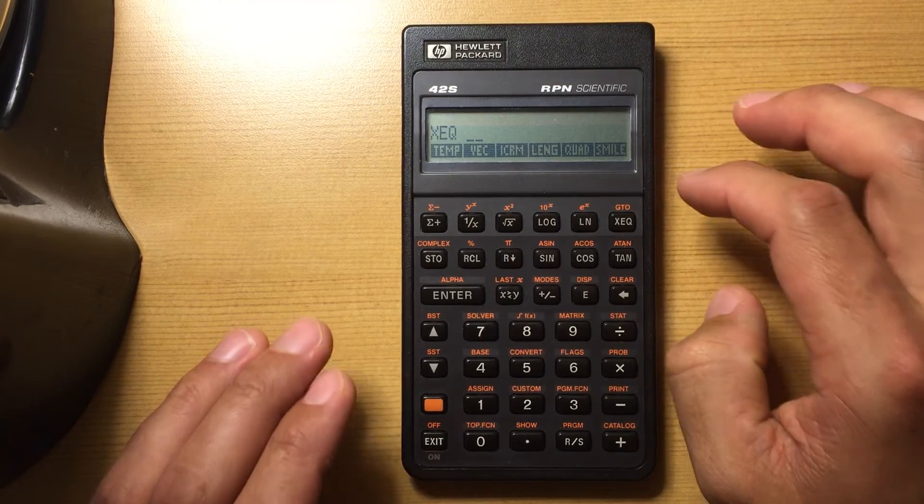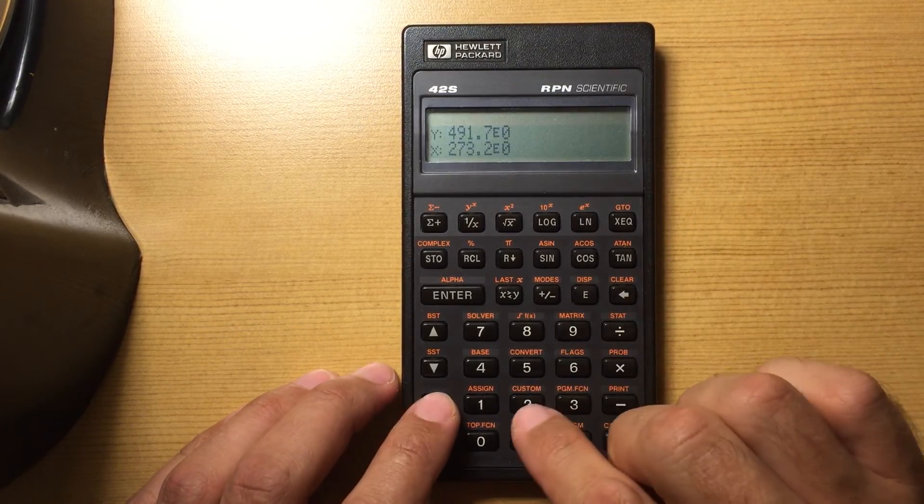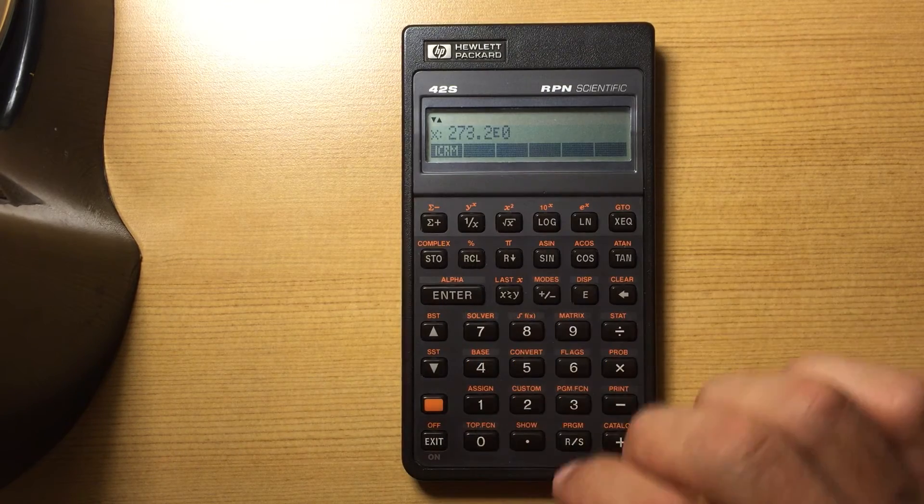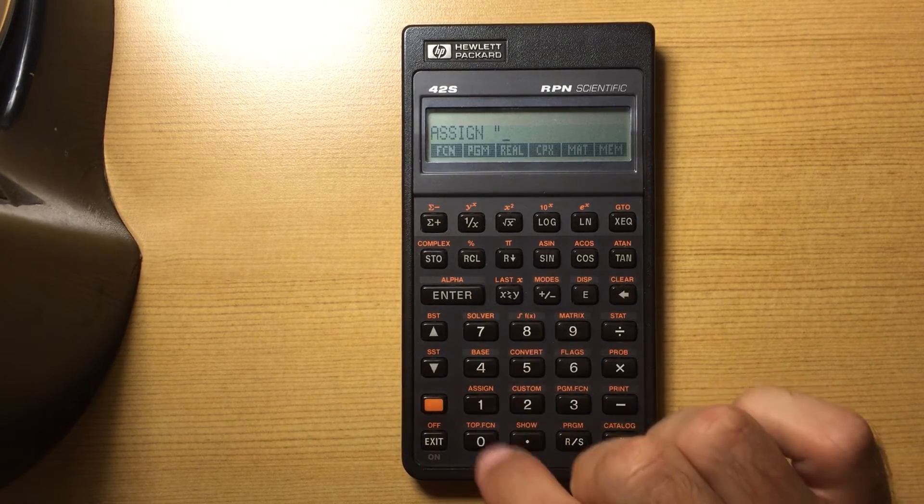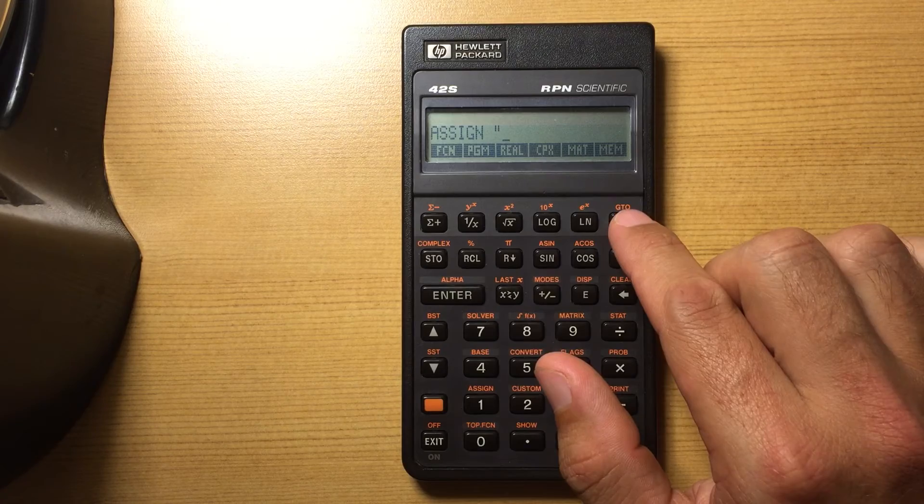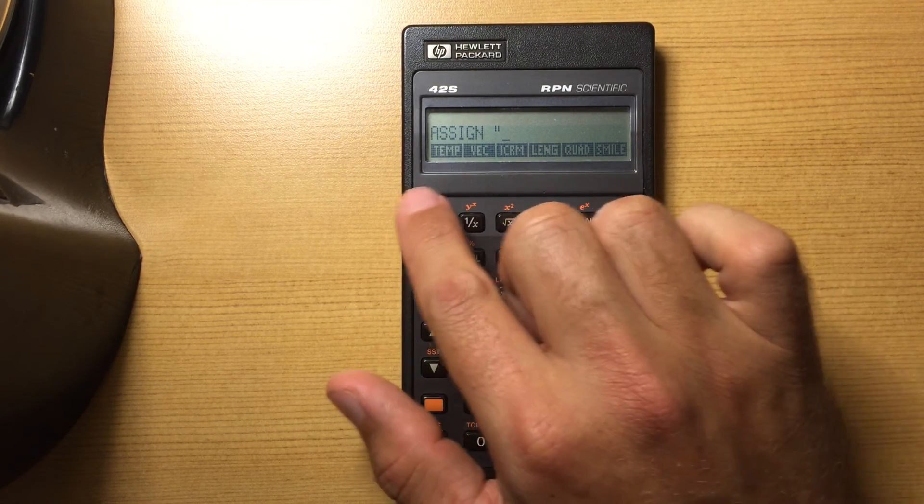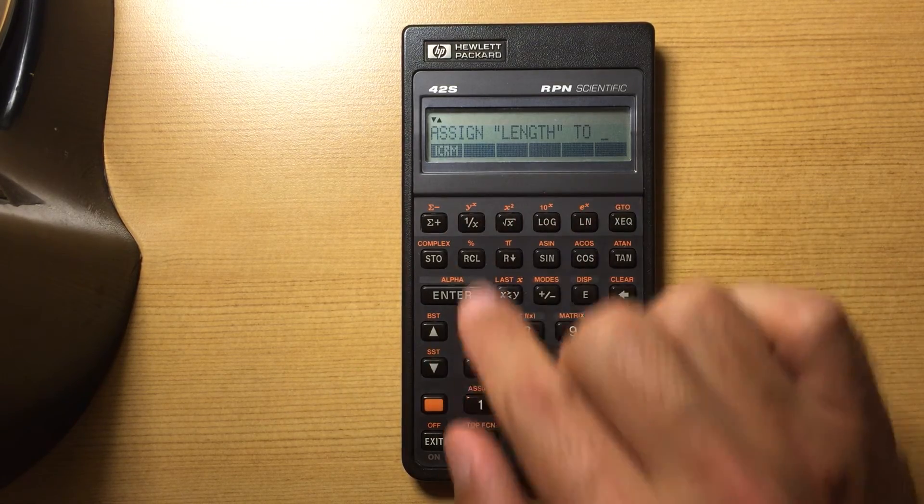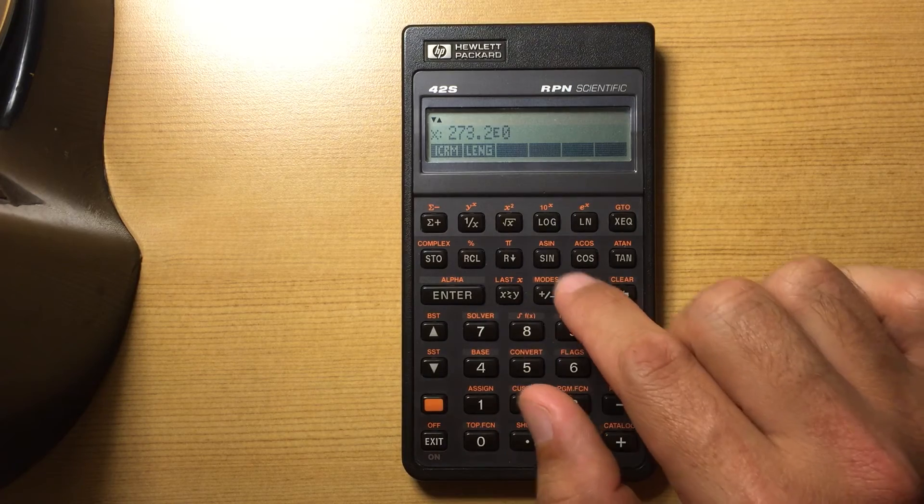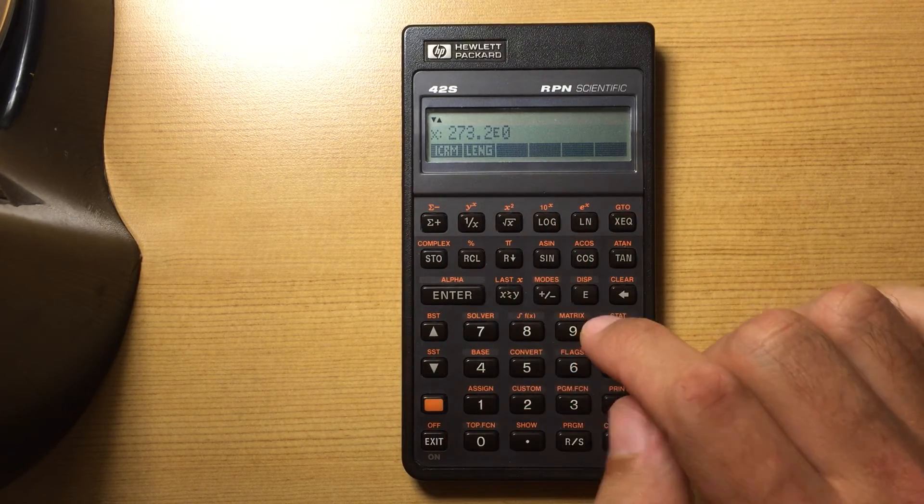Because it's programmable, you can put in what you want, and then use this custom menu to assign what you want. So if I'm going to be using that length program all the time, maybe I want to go to my programs and put in length and assign it to my custom menu. Now I can use that whenever I want.